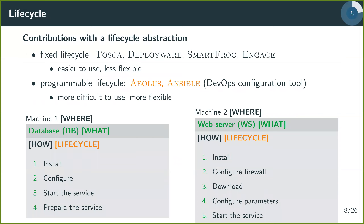Moving to the state of the art, we focus on two main concepts. The first is the lifecycle. When reconfiguring a distributed software system, you need to model the lifecycle of each component. Some solutions offer a fixed lifecycle — like Tosca, Deployware, and Engage — which is easier to use but less flexible. Other solutions let you program the lifecycle of each component, such as IOLUS in academic literature and production tools like Ansible, a DevOps configuration tool. This is more flexible but more difficult to use.